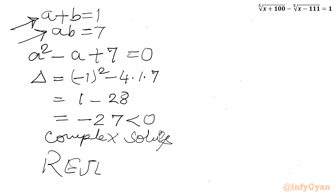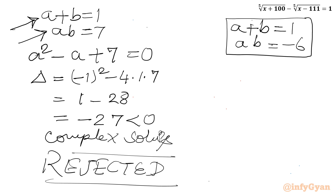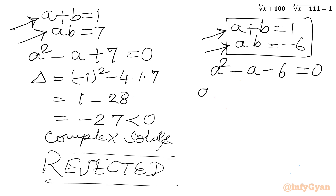Now for the second system: A + B = 1 with AB = -6. Again, thinking of a quadratic whose roots are A and B: a² - a - 6 = 0. I will solve using the factorization method, splitting the middle term as -3a + 2a.